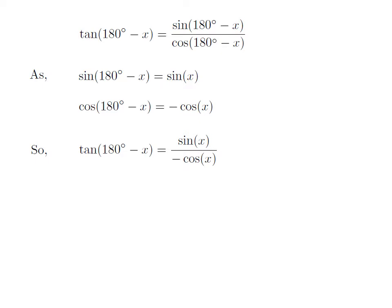Let's apply the above identities in the expression for tangent of 180 degrees minus x. So tangent of 180 degrees minus x is equal to sine of x divided by minus cosine of x.